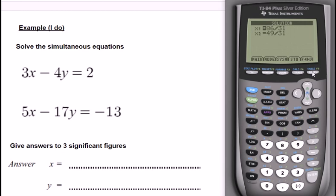And it gives me two answers, simple as that. So it's giving me X1 and X2. You can read that as X and Y. So X equals 86 over 31, and Y equals 49 over 31. Now if you don't want it in fractional form, and you definitely don't, because it's asked you for three significant figures,